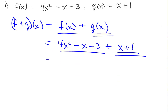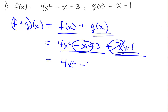Now we simplify by combining like terms. We have 4x², then -x and +x cancel out, and -3 plus 1 gives -2. So (f + g)(x) = 4x² - 2. That's the combination function and mainly what we were asked for.